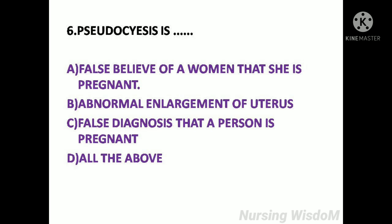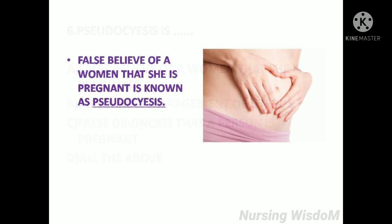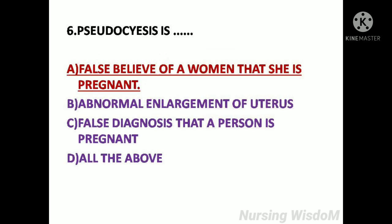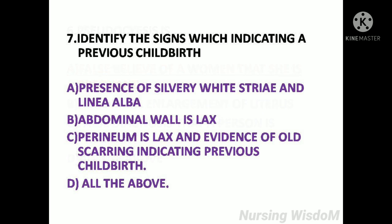Next question: Pseudocyesis is — Option A: False belief of a woman that she is pregnant. Option B: Abnormal enlargement of the uterus. Option C: False diagnosis that a person is pregnant. Option D: All the above. False belief of a woman that she is pregnant is known as pseudocyesis. So the answer is Option A.